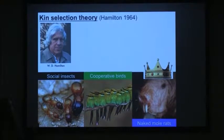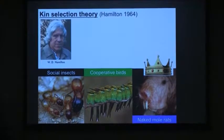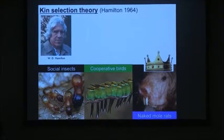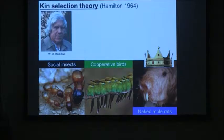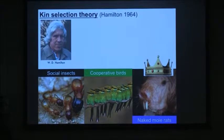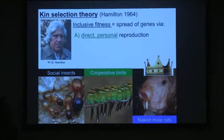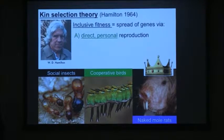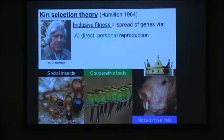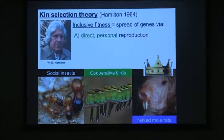W.D. Hamilton came along and proposed the theory of kin selection. Kin selection was novel in that it's one way of explaining why an individual might act selflessly and help others at a personal cost to themselves. The idea is to think about fitness: an individual may pass on its genes to different extents, and through inclusive fitness, benefit from directly gaining reproduction — directly spreading its genes.